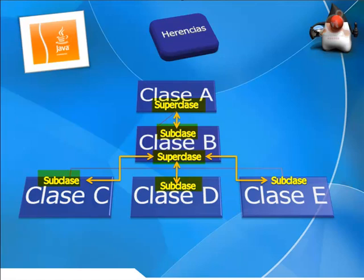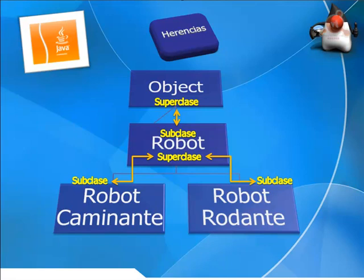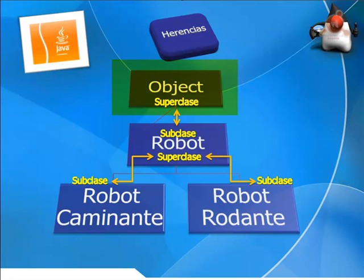Aquí tenemos un ejemplo de jerarquía de clases en Java. En la cúspide de la jerarquía se encuentra la que se denomina la clase Object. Todas las clases en Java heredan de esta superclase. Object es la clase más general dentro de la jerarquía y define los comportamientos heredados para todas las clases y librerías de clases de Java. Si nosotros creamos una clase totalmente nueva y no la hacemos subclase de ninguna otra, es de todos modos subclase de la clase Object.